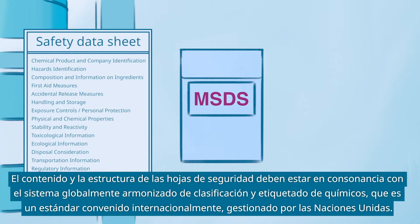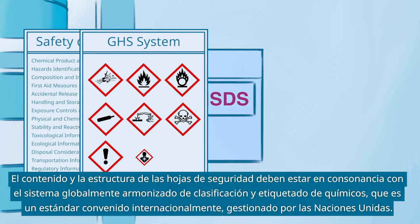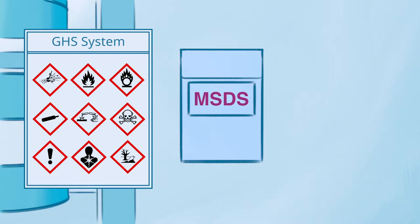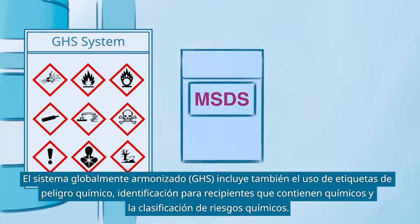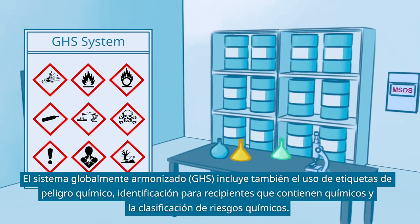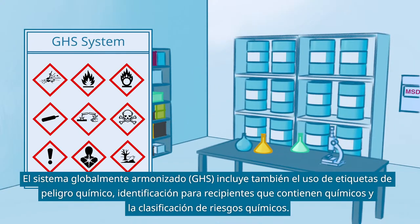The content and structure of Safety Data Sheets should be in line with the Globally Harmonized System of Classification and Labeling of Chemicals, which is an internationally agreed-upon standard managed by the United Nations. The GHS system also harmonizes the use of chemical hazard labels, markings for chemical containers, and the chemical hazard classification.